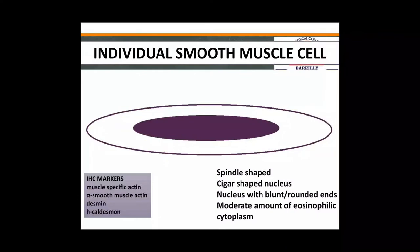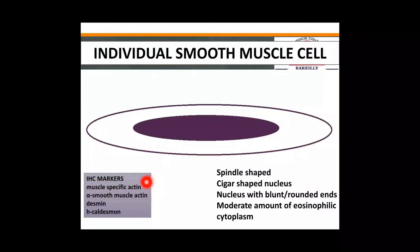The nucleus of smooth muscle cells in leiomyoma is elongated with rounded ends (cigar-shaped) and is bland — not hyperchromatic, not pleomorphic, with regular nuclear boundaries and bland chromatin. There is moderate eosinophilic (pinkish) cytoplasm. Immunohistochemical markers used to demonstrate smooth muscle cells include muscle-specific actin, alpha-SMA, desmin, and h-caldesmon — these are important MCQ topics.